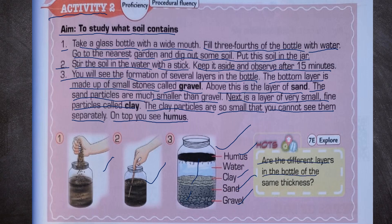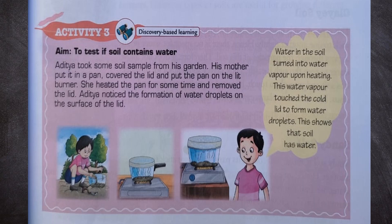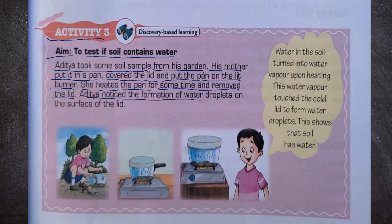The different layers in the bottle are not of the same thickness. Activity to test if soil contains water: Aditya took some soil sample from his garden. His mother put it in a pan, covered the lid, and put the pan on the burner. She heated the pan for some time and removed the lid. Aditya noticed the formation of water droplets on the surface of the lid. The water in the soil turned into water vapor upon heating, and this water vapor touched the cold lid to form water droplets. This shows that soil has water.